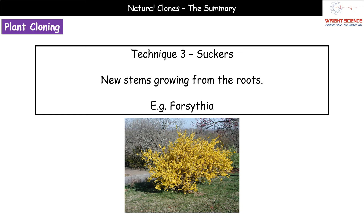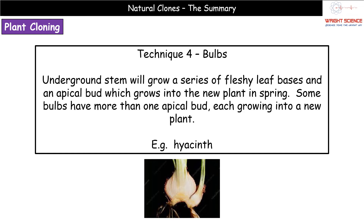The third technique is suckers — new stems growing from the roots of the plant itself. A great example is Forsythia, a common UK plant with beautiful bright yellow flowers appearing around March and April. Because it produces suckers, when you trim the bush back, new stems grow from the roots, creating a lovely bush — which is why so many people have it in their gardens.